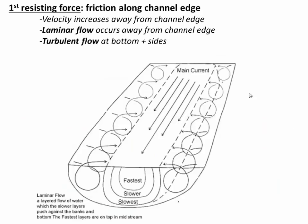Now let's look at the resisting forces. Our first resisting force is friction along the channel edge. In a hypothetical channel, as water flows against the rough edge, we have turbulent flow — the water is disturbed, gets chaotic, and slows down. However, out in the middle of the channel where the water is deeper and further from the channel edge, the water behaves in a more laminar flow fashion and tends to go faster. So the fastest water in a river channel is typically right in the center, furthest from the channel edges where friction is acting to slow it down.